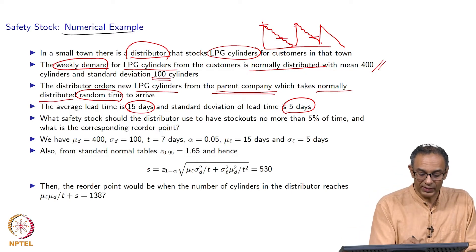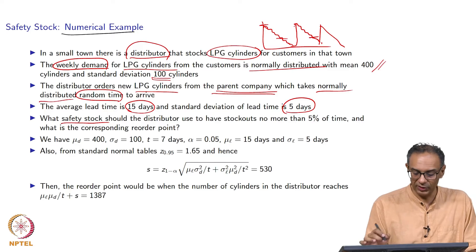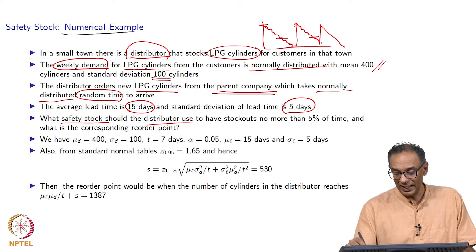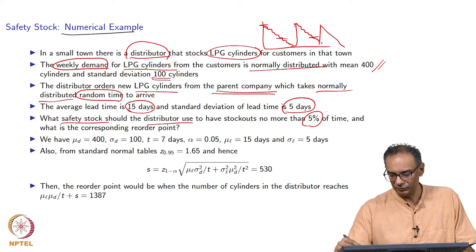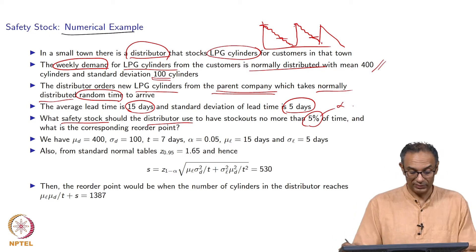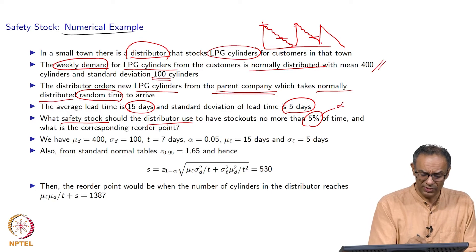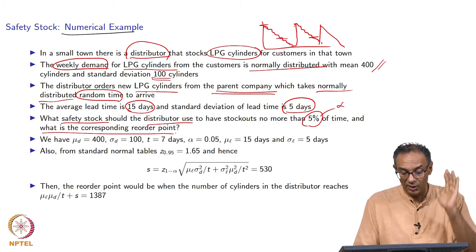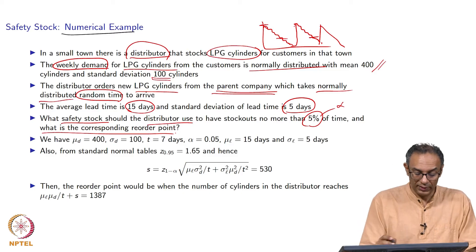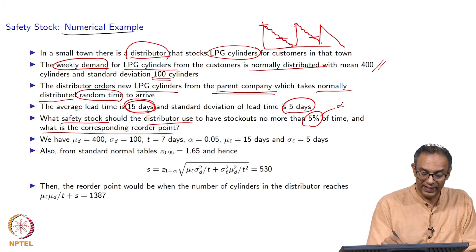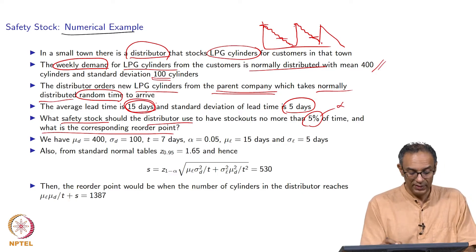The question is: what safety stock should the distributor use so that there is a stockout at most 5% of the time (alpha = 0.05)? Also, what is the corresponding reorder point — the threshold at which the distributor should place an order? Remember that the lead time is 15 days.